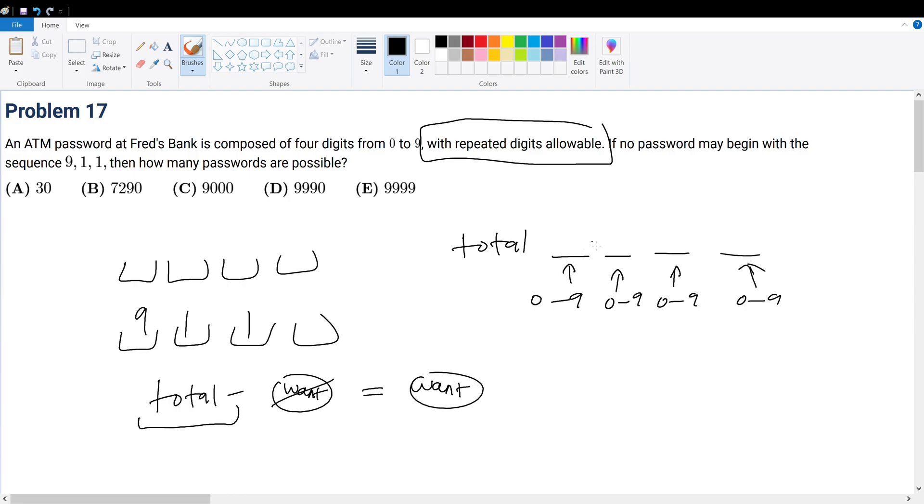Well, for every digit, I have 10, 10, 10, and 10. Again, these 10 possibilities come from the numbers of 0 to 9 inclusive. So how many total passwords do I have?